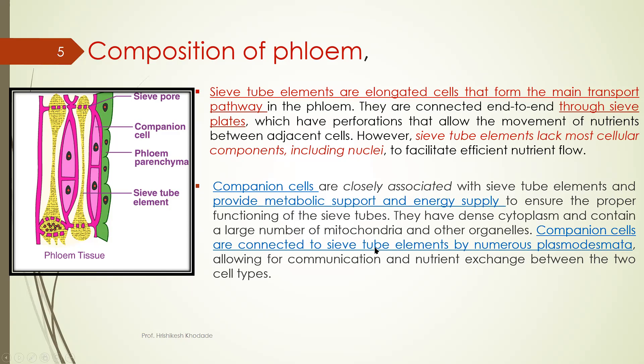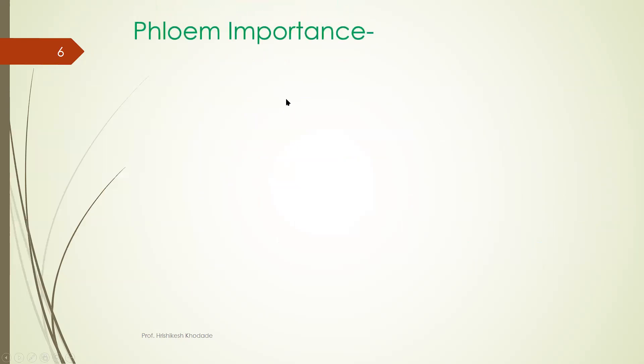Companion cells are connected to the sieve tube element by numerous plasmodesmata. So plasmodesmata are those areas where you have openings. Plasmodesmata through which the cell shows intercellular transportation. So this is the composition of phloem. We have understood the phloem.